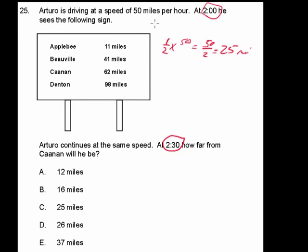But our question is not how far he drove, our question is how far is he now from Canaan? Well, in that half hour time period, if he continued at the same speed, that is 50 miles per hour, we know that he drove 25 miles.